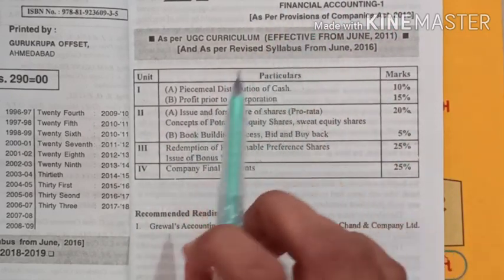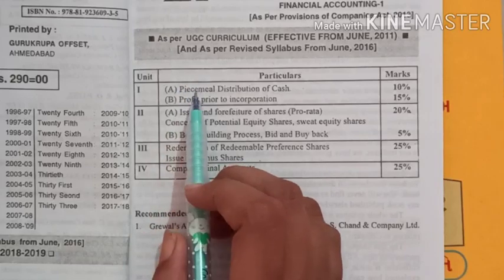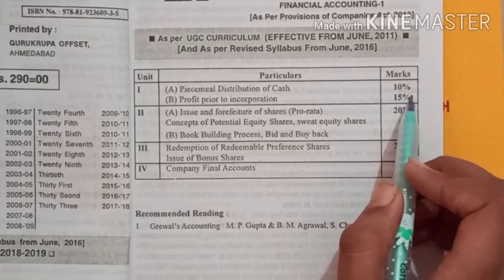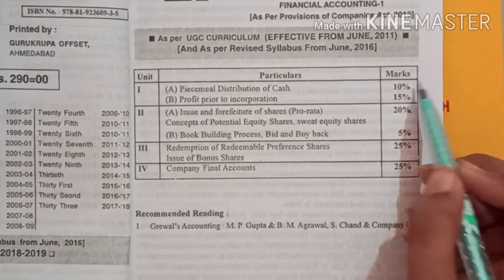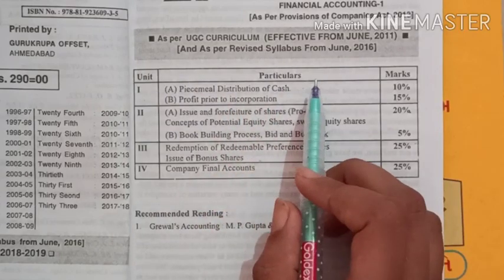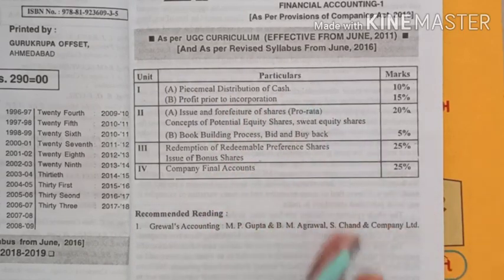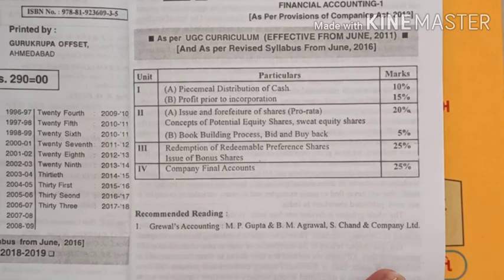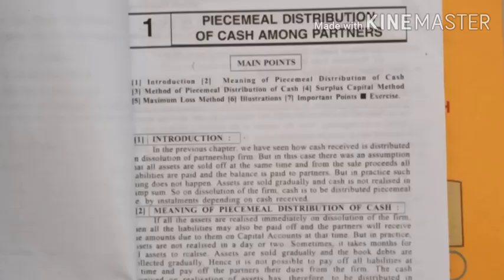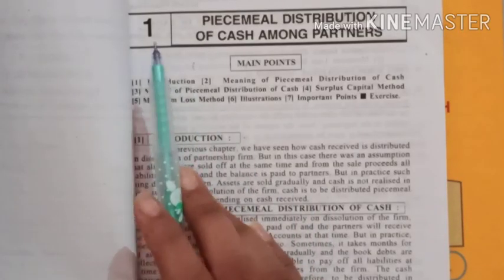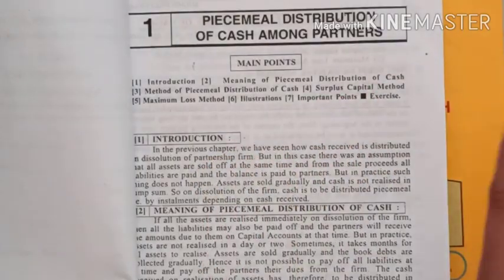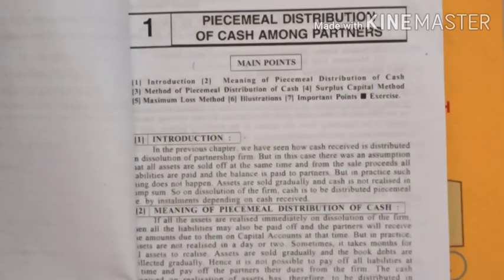In today's lecture, we are going to start with chapter number 1 — Piecemeal Distribution of Cash. This chapter covers 10% marks, which means 7 marks will be covered from this chapter in your examination. In chapter number 1, we are going to understand what is meant by piecemeal distribution of cash among the partners.